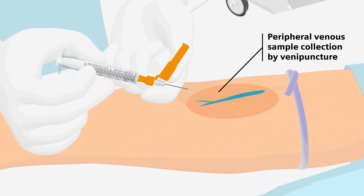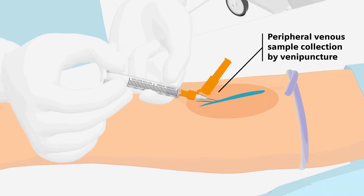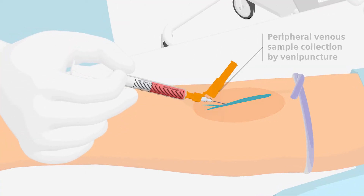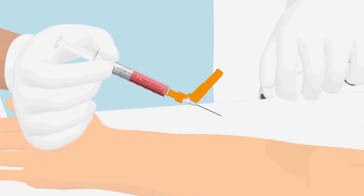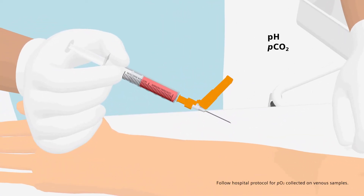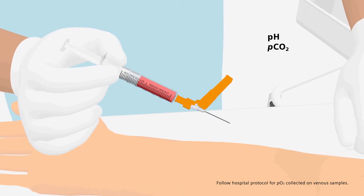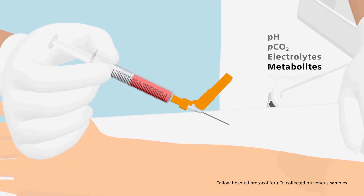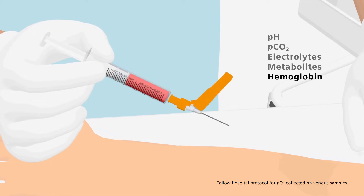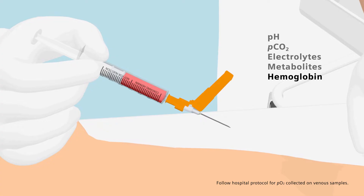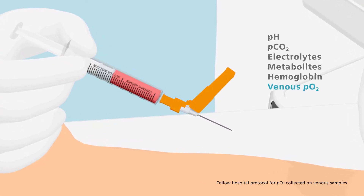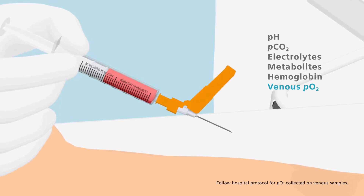Draw the sample slowly within less than one minute of applying the tourniquet. A peripheral venous sample is suitable to determine the acid-base balance of a patient and to monitor acid-base balance trends or to screen for systemic acidosis. In addition, electrolytes, metabolites, hemoglobin, and the dishemoglobin variants may be reported on a venous sample. However, venous oxygen values may be different from the arterial blood oxygenation status.